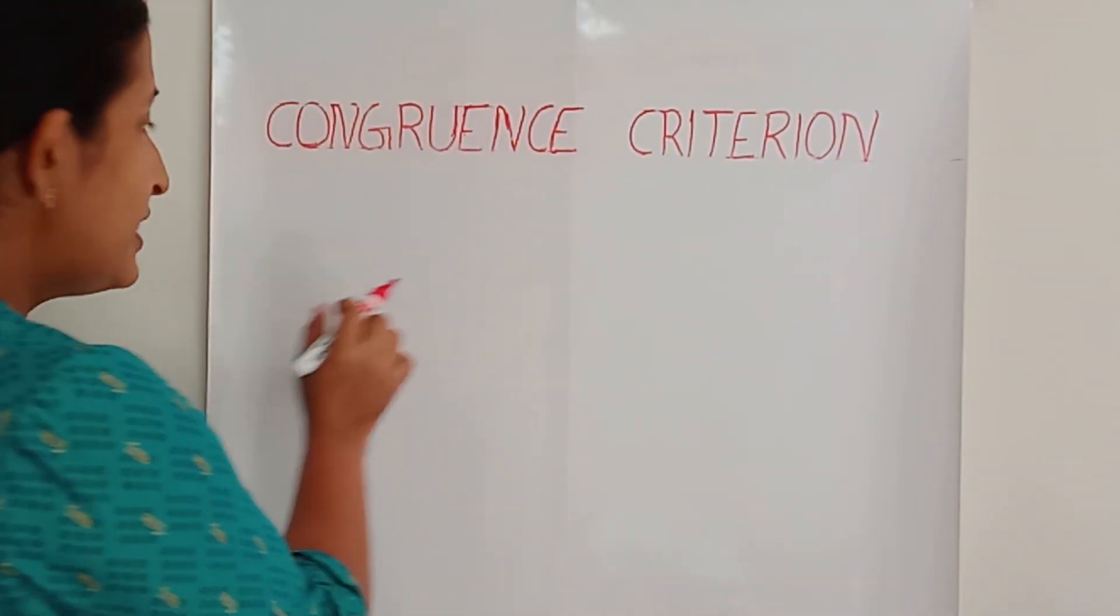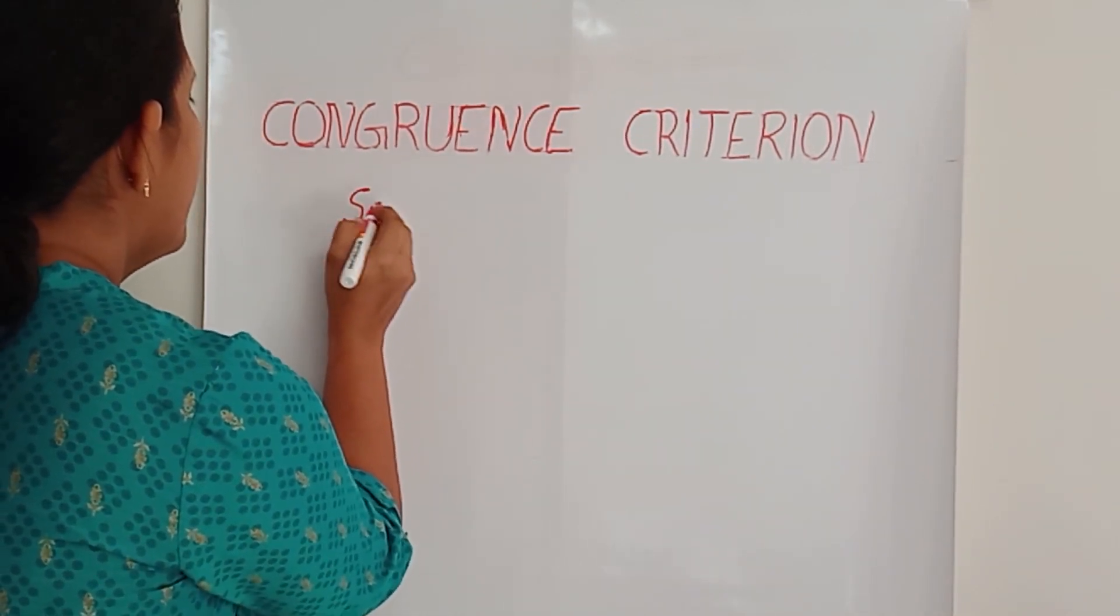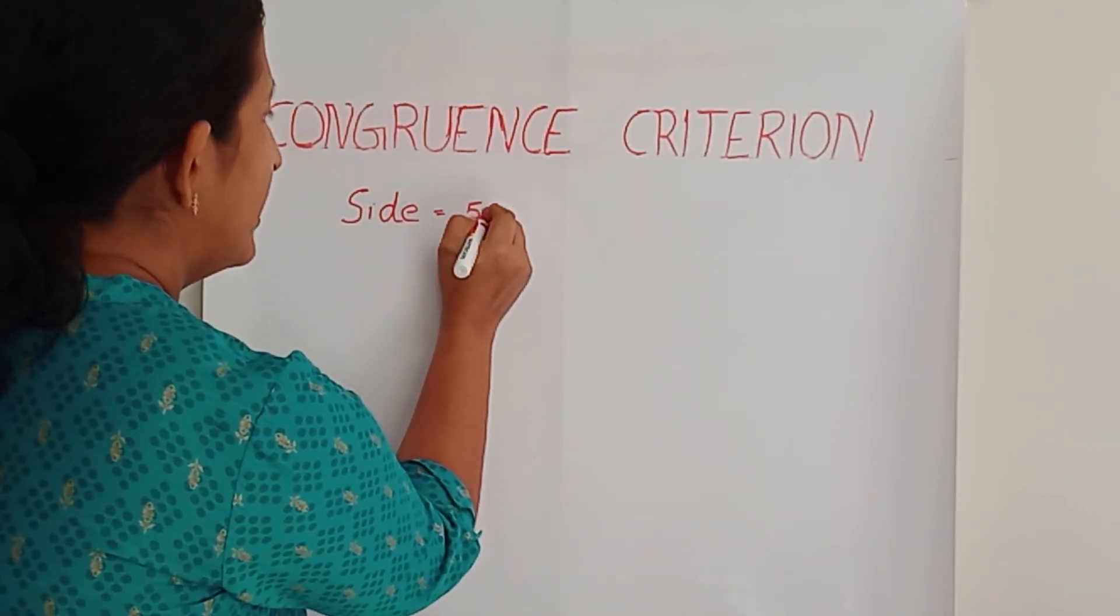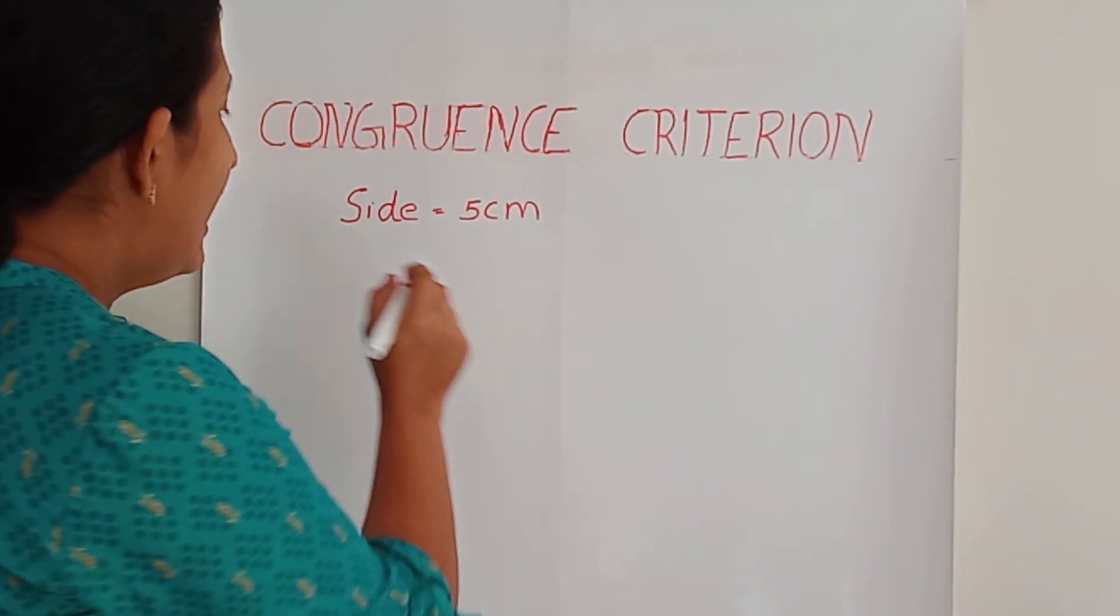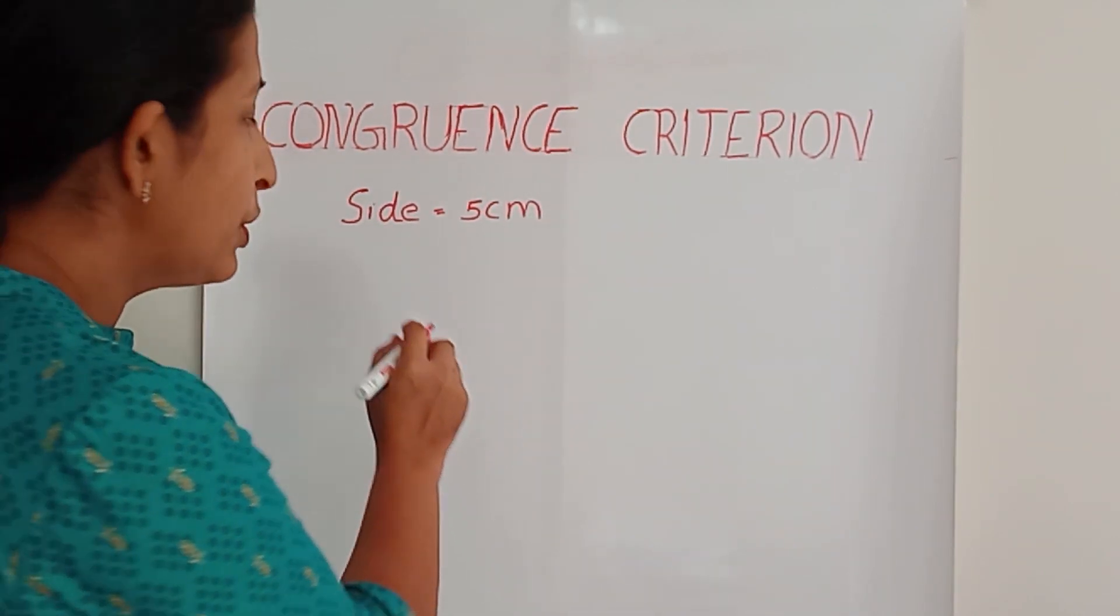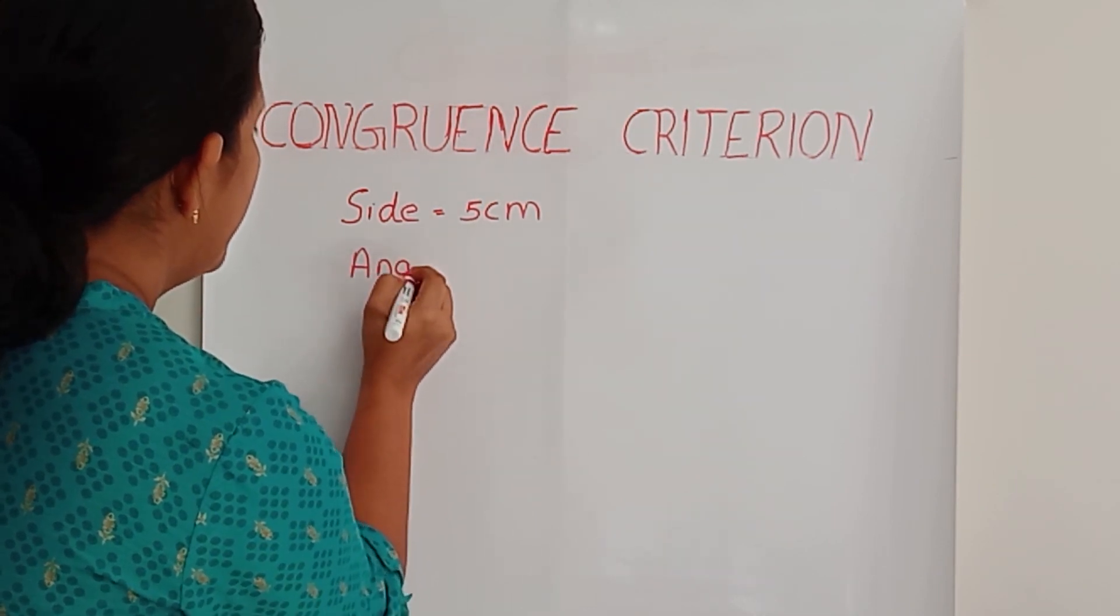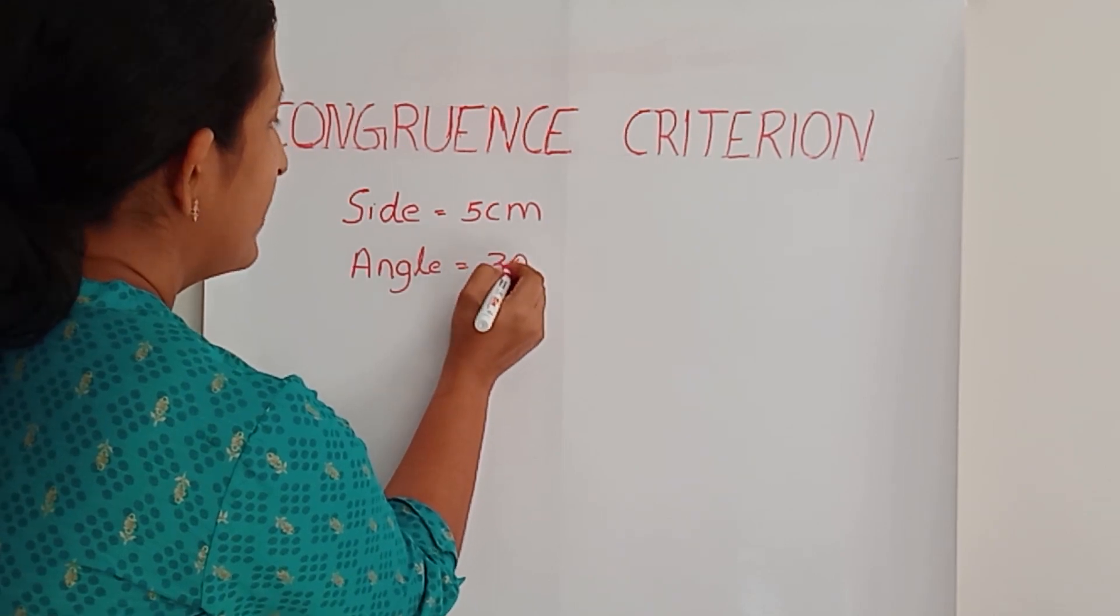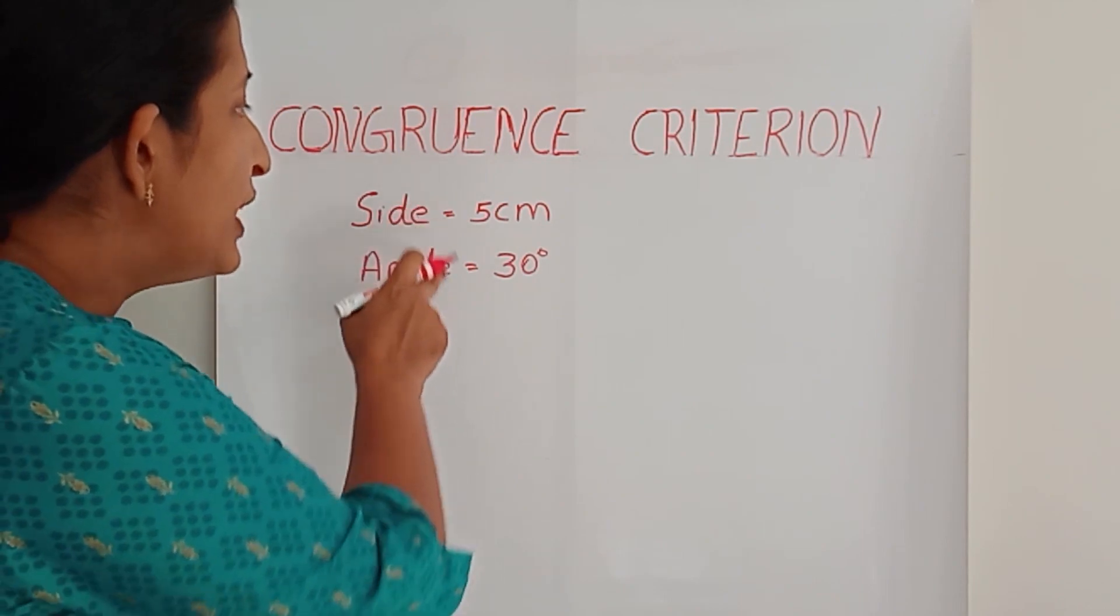First one is, one side is 5 cm. And he has given one more clue. One angle is 30 degrees. So Anna is going to draw the same triangle with these data.